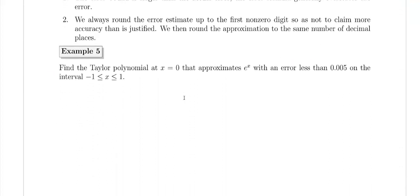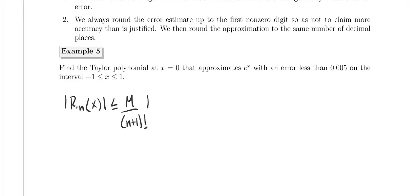On to the next example — similar but different. This time we want to find the Taylor polynomial at x = 0 that approximates e^x with an error less than 0.005 on the interval [−1, 1]. We don't know the order n in advance; we just need to find an n that produces error less than 0.005. We start with our error formula: the error is less than or equal to M over (n+1)! times |x|^(n+1).